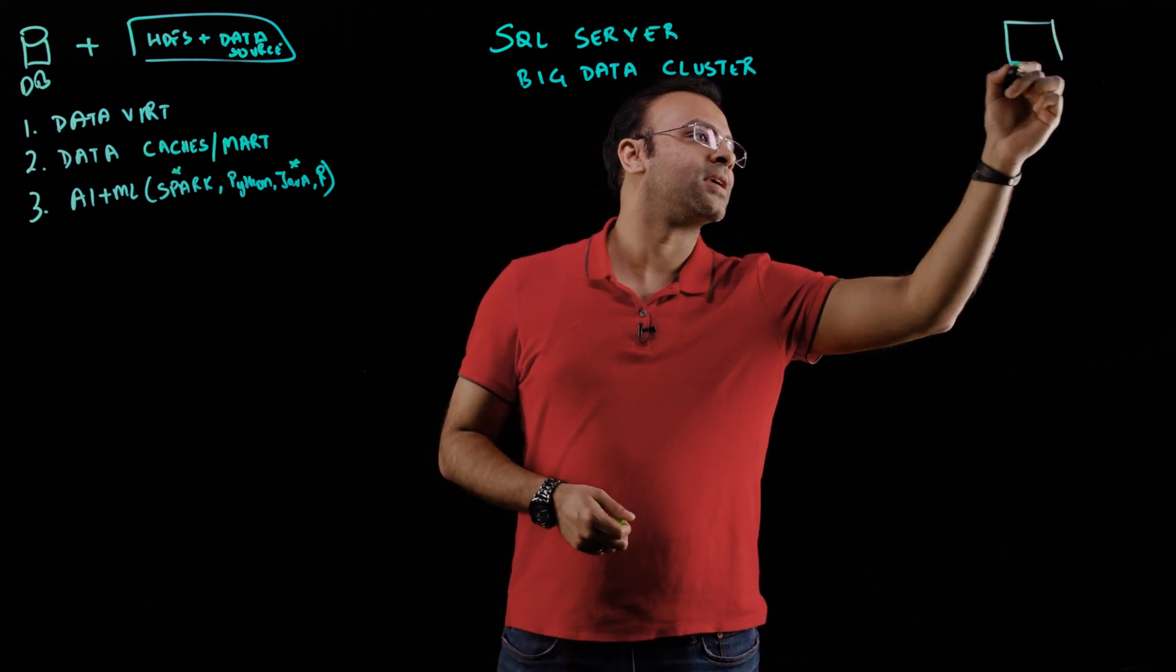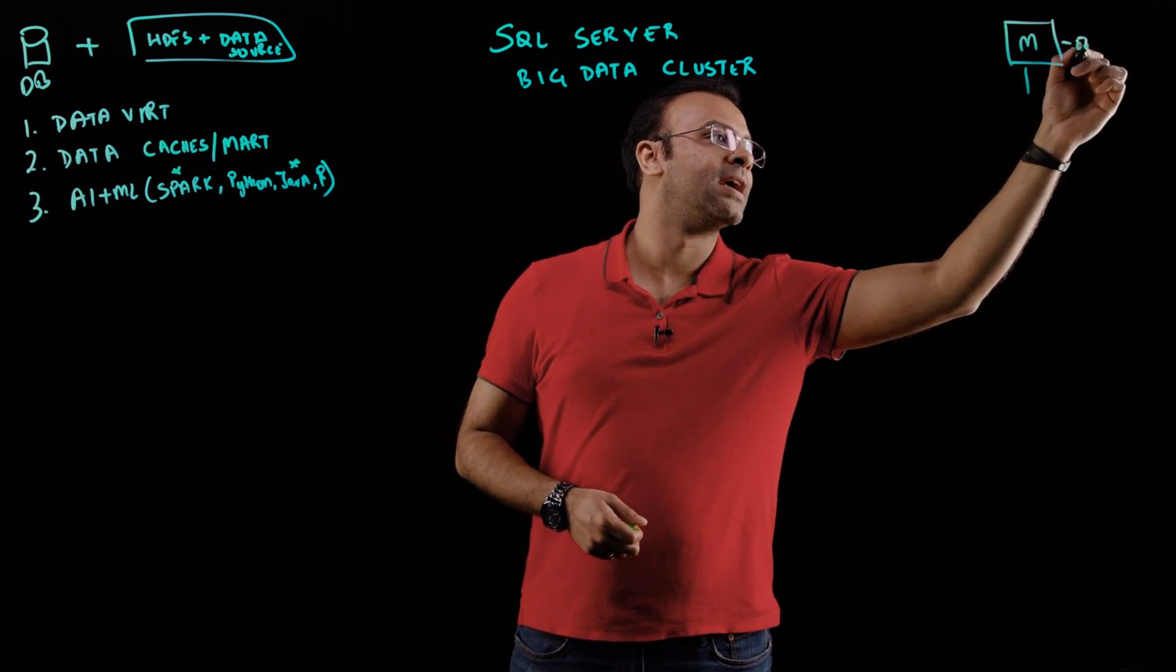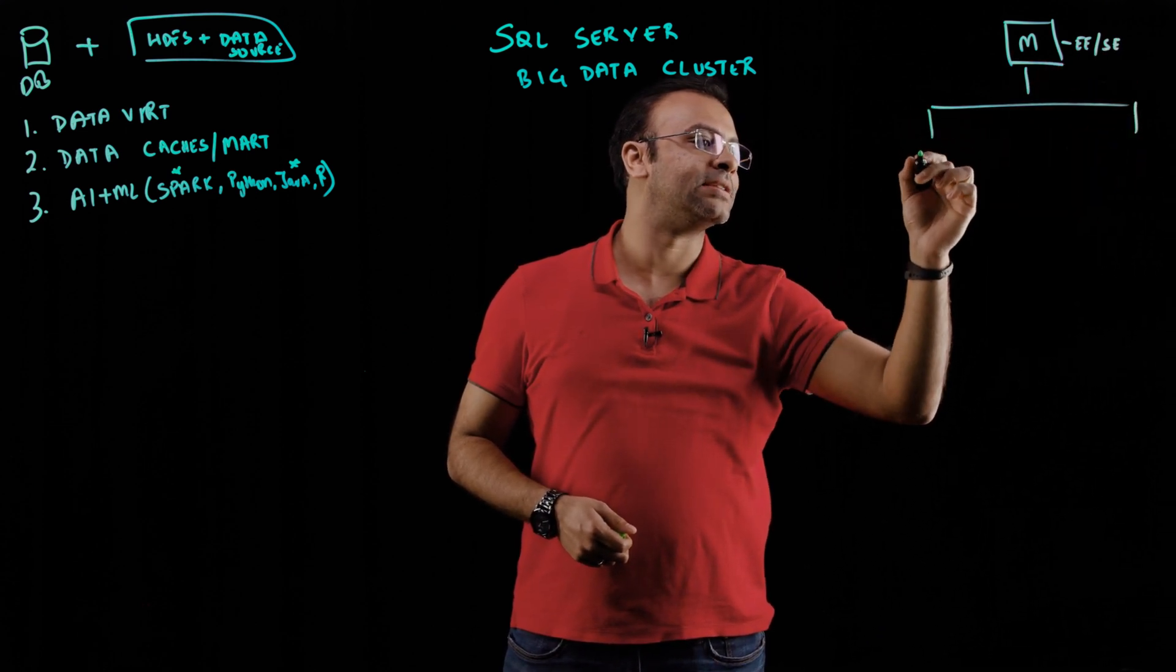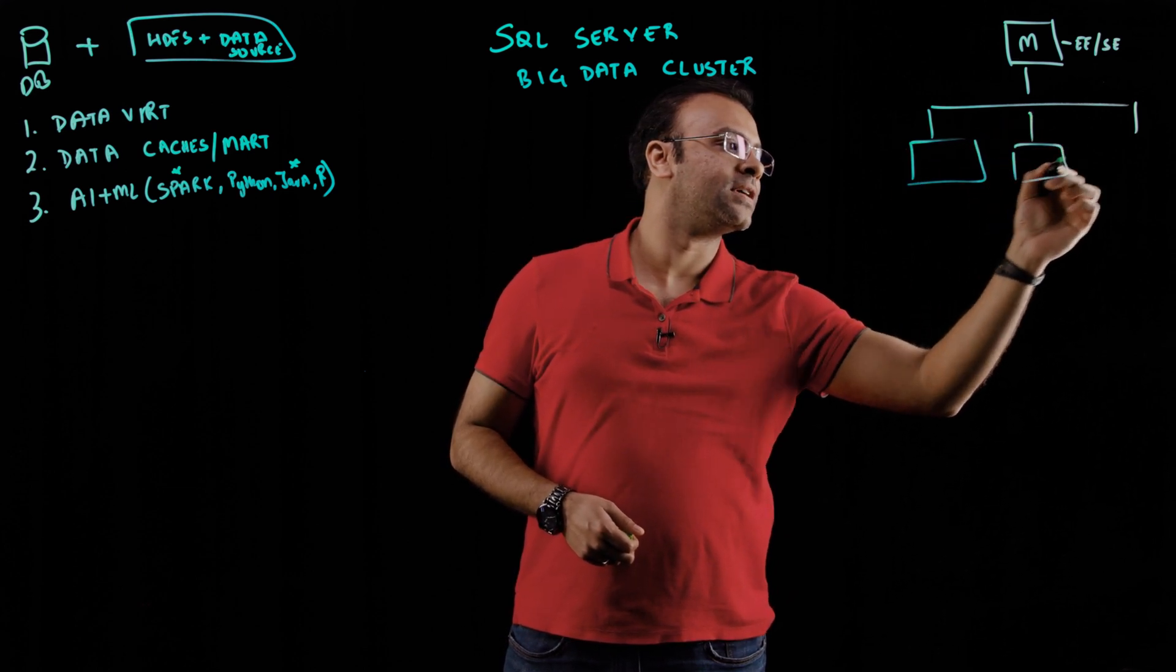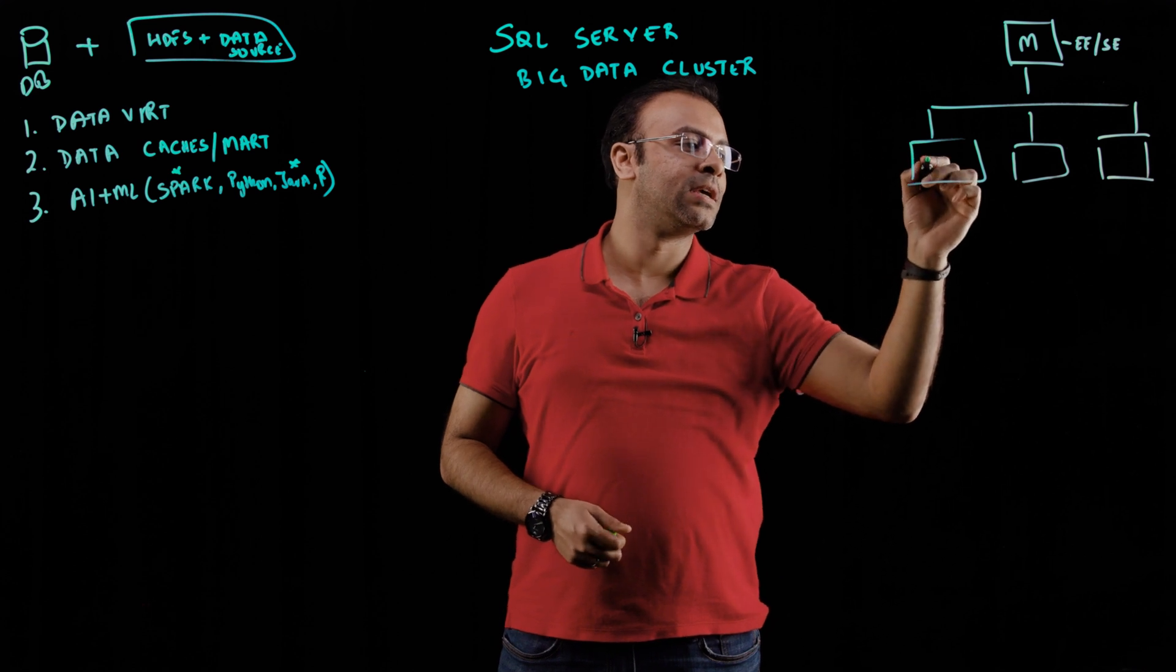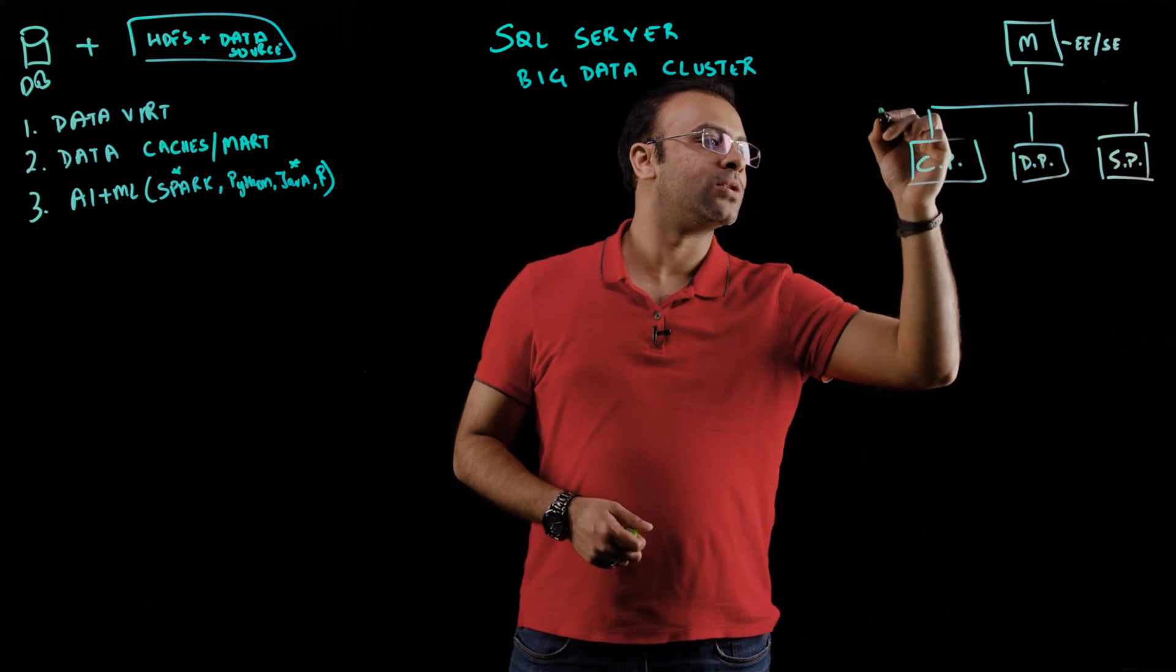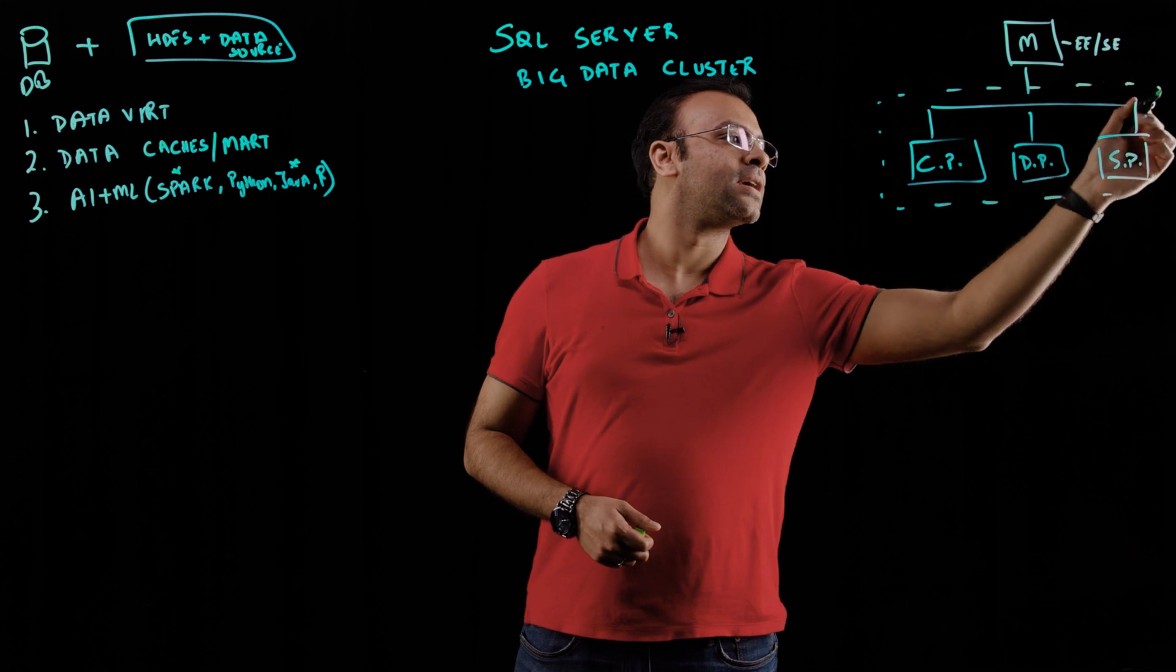So let's see what a SQL Server architecture for a Big Data Cluster looks like. You have something called the master, which is a SQL Server Enterprise Edition and Standard Edition instance, and then you have all the other components. These are essentially a bunch of containers running either compute pools, data pool, and storage pool. All of this is what we refer to as the cluster node.